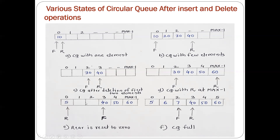After doing two more insertions the queue will be full, with elements 5, 6, 7, 40, 50, 60 present in the queue. When the queue is full, the rear is not at the last position — it is somewhere in the middle — and the front is not at the 0th position; it is actually one position behind the rear. This is the only condition whenever the circular queue becomes full: when all elements are occupied. Otherwise it is not going to become full, and this condition we have to remember at the time of implementation.